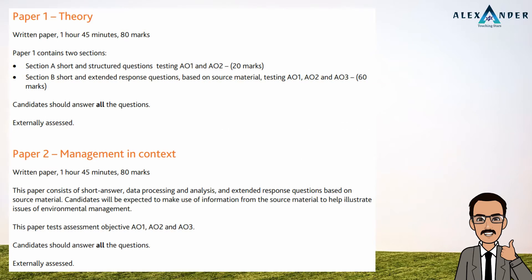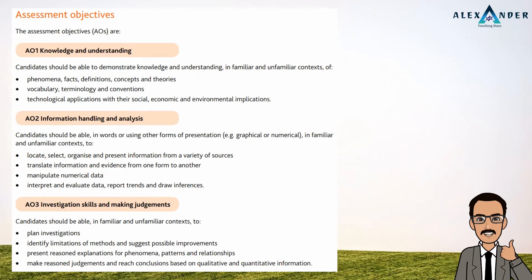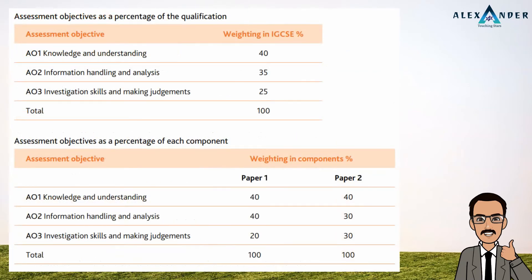The assessment objectives are: firstly, knowledge and understanding, which will take a major part of your learning time; secondly, information handling and analysis, which comes with experience in solving past paper questions; and lastly, investigation skills and making judgments, which is more important in paper 2. There is slightly more overall weightage at 40% to assessment objective 1 for both papers. Knowing the content in and out is very important, but almost equally important is your ability to use information given in the question paper wisely using skills of analysis and higher thinking. There is more emphasis on investigation skills and judgment-based questions in paper 2.